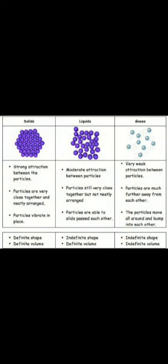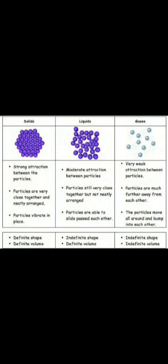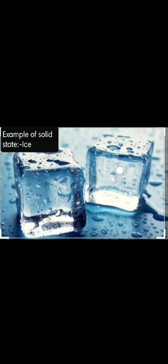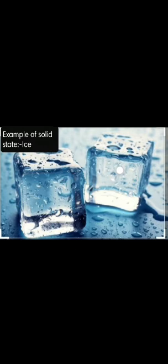Particles vibrate in their own place. Solids have a definite volume and always occupy the same amount of space. There is no enough space for the particles to move around, so solids cannot flow. Therefore, solids have a definite shape, definite size, and definite volume. For example, ice is the solid state of matter.